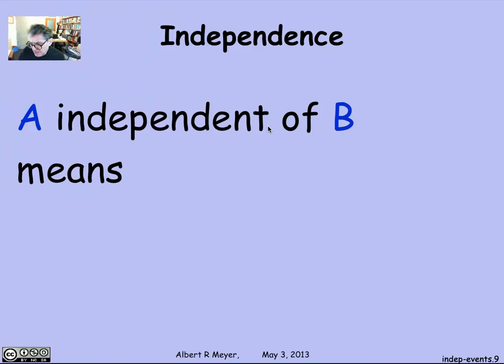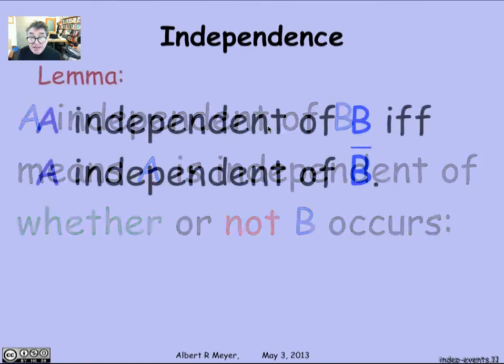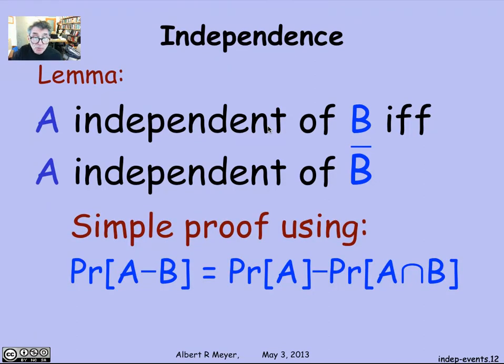Now again, the intuitive idea that A and B have nothing to do with each other is that A is independent of B means that A is independent of whether or not B occurs. That is to say, if A is independent of B, it ought to be independent of the complement of B. And that's a lemma that's also easily proved. A is independent of B if and only if A is independent of the complement of B. It's a simple proof using the difference rule.